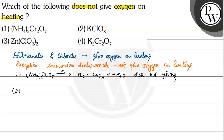The second option is KClO₃, potassium chlorate. On heating, it gives two molecules of potassium chloride (KCl) and oxygen gas.